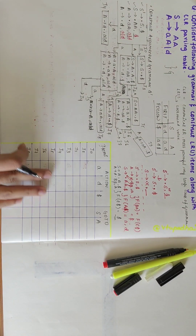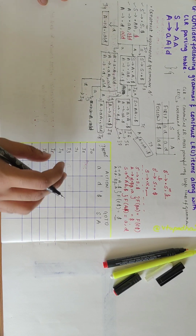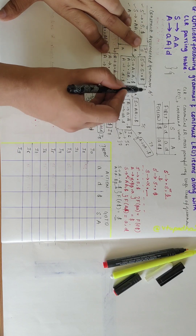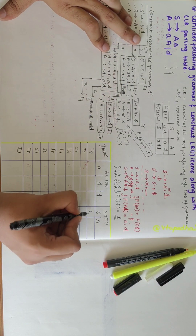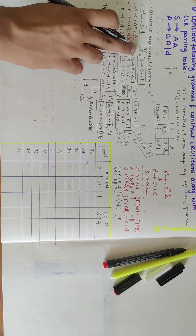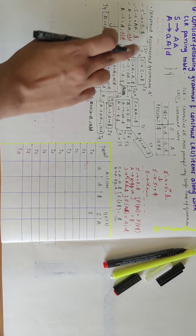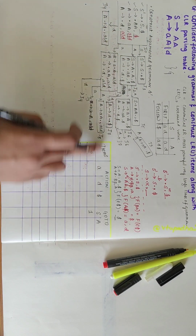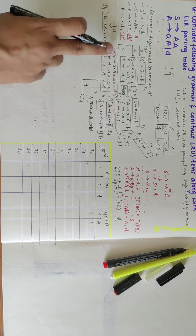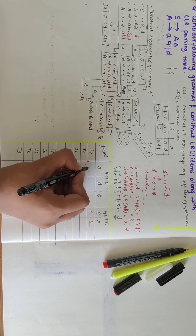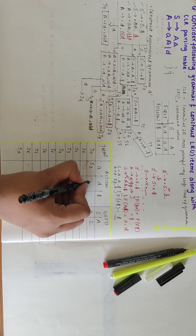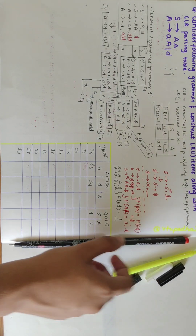Now I will start filling the CLR parsing table. In the goto part I will write all the non-terminals, and in the action part I will write all the terminals. From I0 over S, I get I1, so I write 1 in the goto. From I0 over A, I get I2, so I write 2. From I0 over small a, it shifts to I3, so I write S3. From I0 over d, I get I4, so I write S4.